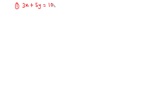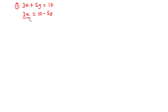Now, let's try to solve the linear equation 3x plus 5y equals 10. In this equation, we have two unknowns, x and y. The first thing we are going to do is to solve the equation for one of the variables. Let's solve the equation for x — basically, we are going to make x the subject. So, we have 3x equals 10 minus 5y. Dividing both sides by 3, we get x equals 10 over 3 minus 5 over 3 times y. This means that if we choose any value of y, we are going to get a corresponding x value.